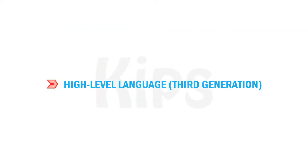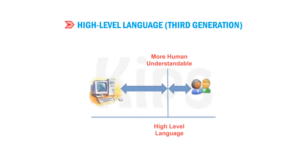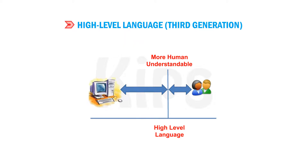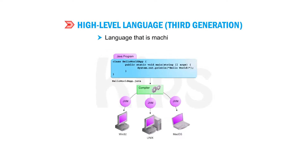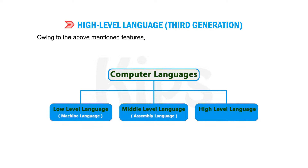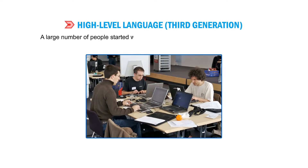We will now discuss high-level language — third generation language. The restrictions in the usage of machine and assembly languages prompted people to develop a language with simpler and user-friendly features, that is also machine independent. Owing to these features, it became easy to learn and use computer languages, and a large number of people started writing computer programs using these languages.